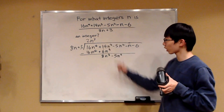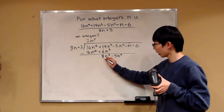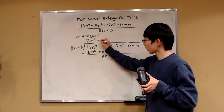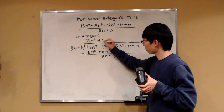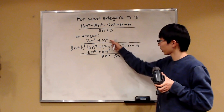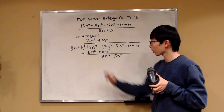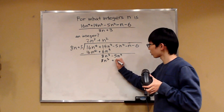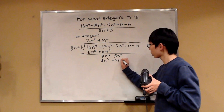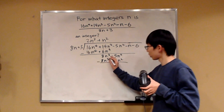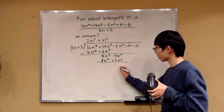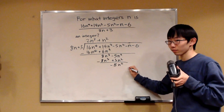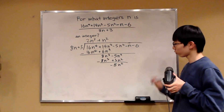Our next term — we want to multiply it so that this 8n cubed will disappear. Our next term will just be plus n squared. Because when we take n squared and multiply it with the divisor, we get 8n cubed plus 3n squared. And then we subtract. This cancels out, so that's negative 5 minus 3, which is minus 8n squared.